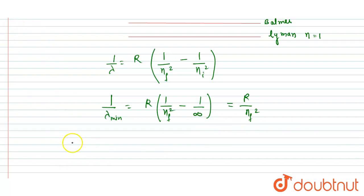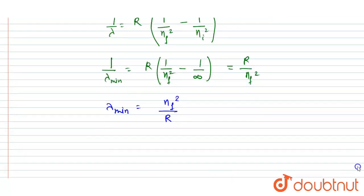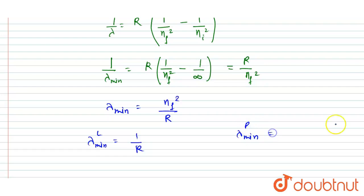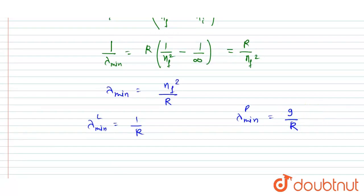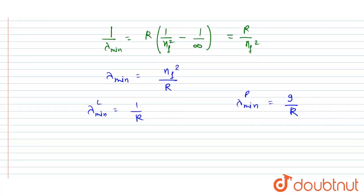For Lyman, lambda minimum equals 1/R, since n_f = 1. For Paschen, n_f = 3, so lambda minimum equals 9/R. Very simple.